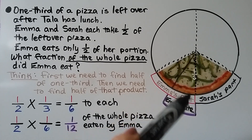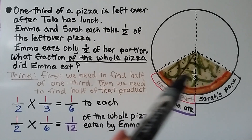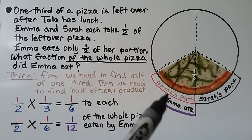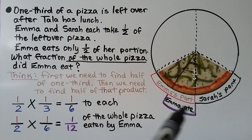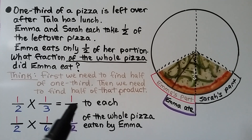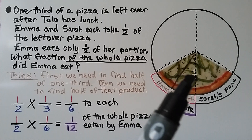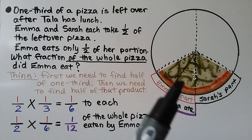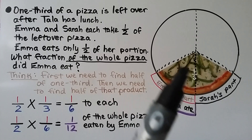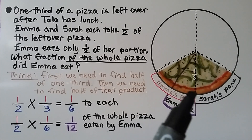Emma and Sarah each got half of that third. First, we find half of one-third: one-half times one-third equals one-sixth. Splitting the one-third in half gives us one-sixth as Emma's initial portion.